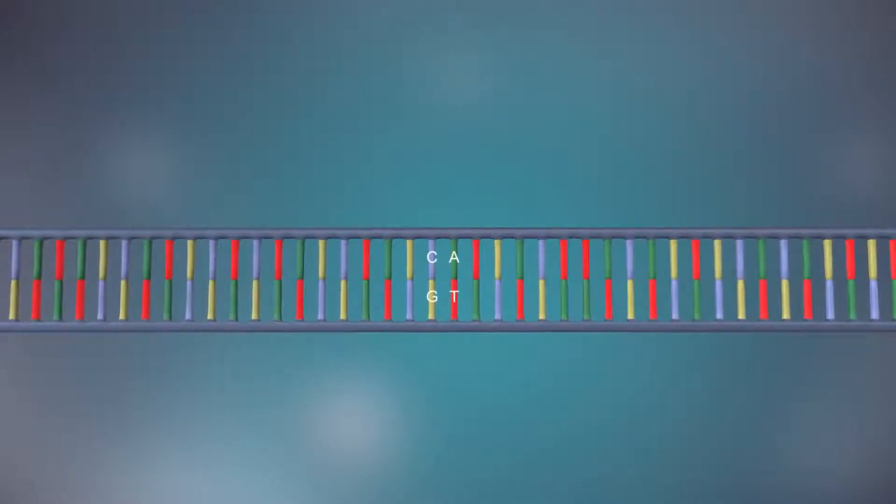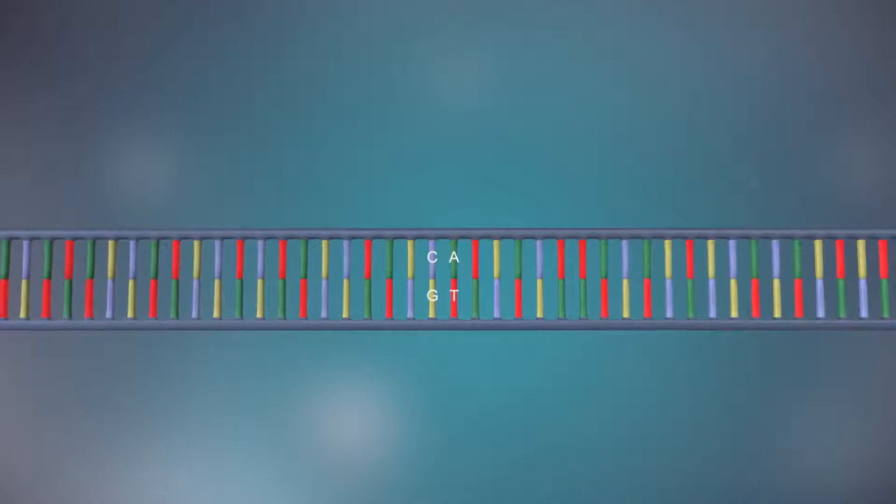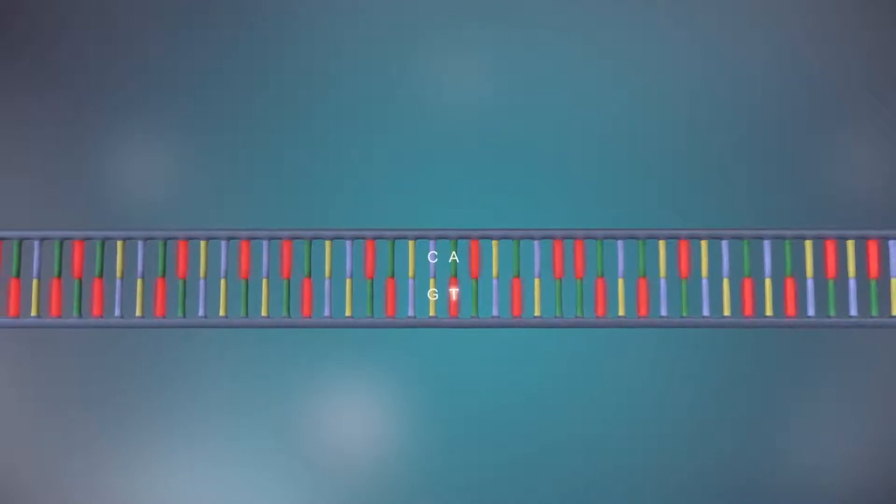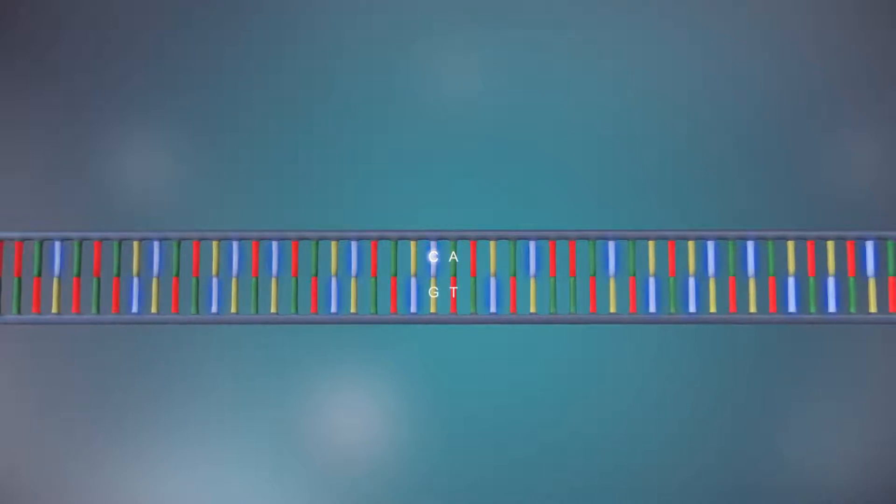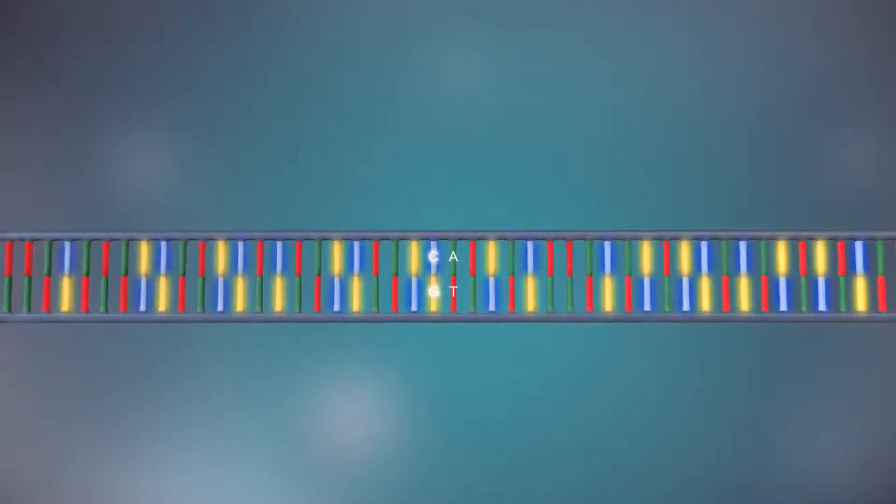The two strands are complementary. This means that wherever there's a T in one strand there will be an A in the opposite strand, and wherever there's a C there will be a G in the other strand.